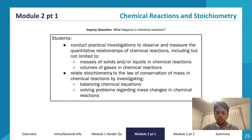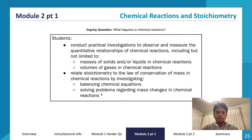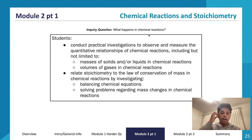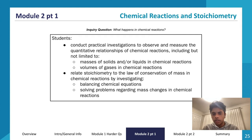We're doing calculations that relate to the relationship between masses of solids and liquids and volumes of gases within a chemical reaction. We also relate stoichiometry to the law of conservation of mass in chemical reactions by investigating balancing chemical equations and solving problems regarding mass changes. Balancing chemical equations is probably the most important part of stoichiometry.